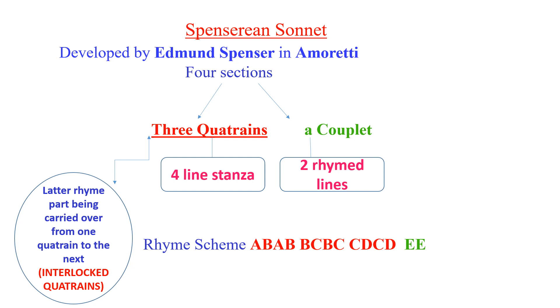In the Spenserian sonnet, the rhyme from the first quatrain — B — is carried over into the second quatrain, and the rhyme from the second quatrain — C — is carried over into the third quatrain. That is why they are called interlocked or linked quatrains.